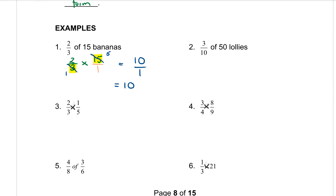Question 2: we want 3 over 10 of 50 lollies. So 3 over 10 is my starting fraction, the word 'of' means to multiply, and I'm multiplying that by 50, putting it over 1 because any whole number always goes over 1. Now we look for cancelling — usually you check diagonally. Here it is diagonal: the 10 and the 50 both divide by 10. Try to find the biggest common factor — 5 would work, but 10 is bigger, so divide by 10. 10 divided by 10 is 1, and 50 divided by 10 is 5.